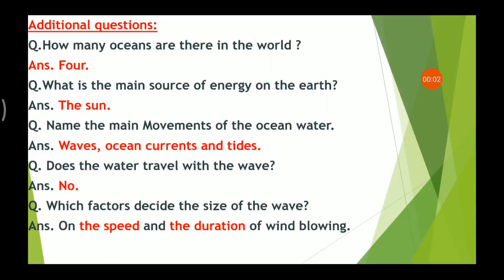Here we have our first question: How many oceans are there in the world? The answer is four. Next, we have: What is the main source of energy on the earth? The answer is the sun.